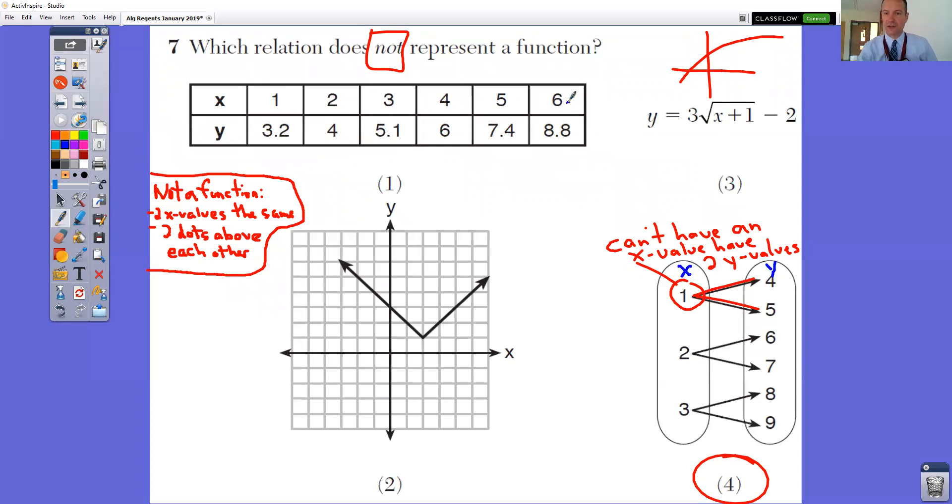Number four is not a function because notice that we're using this one twice. We have the 0.14 and the 0.15. So we're using that x value of one twice. So that one would not be a function.